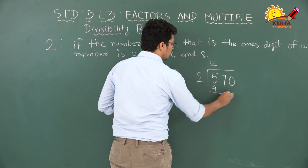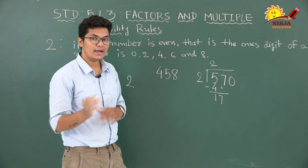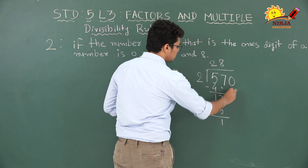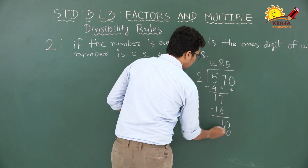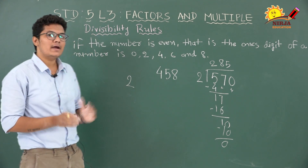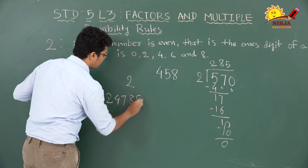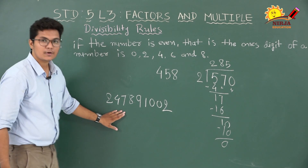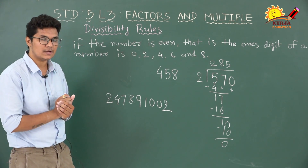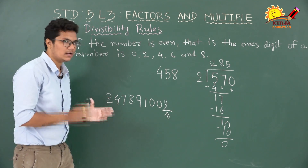If you want to check: 570 divided by 2 — 2 into 5 gives 2, remainder 1; bring down 7, 2 into 17 gives 8, remainder 1; bring down 0, 2 into 10 gives 5, remainder 0. The remainder is 0, so 2 divided 570 exactly. This confirms 2 can divide every even number. And for a very large number, instead of doing long division, just check the ones digit — if it is 2, that is an even number, so we directly know this number is exactly divisible by 2.